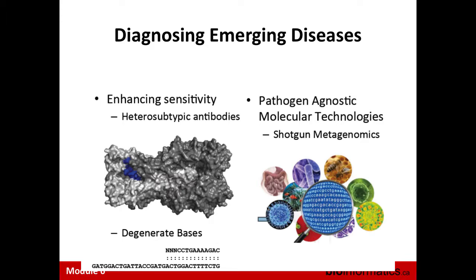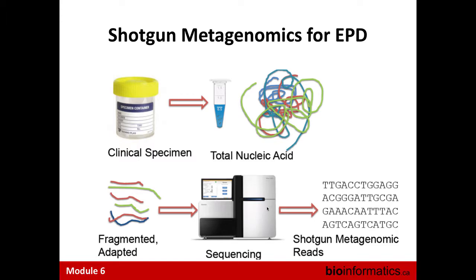With whole genome sequencing, you don't need any pre-existing diagnostic or need to enhance the sensitivity of existing diagnostics — you just sequence the genome, look at it, and attempt to diagnose the identity of that novel pathogen using only that genomic sequence information. The approach we use is shotgun metagenomics. There are two types: single locus amplicon-based techniques like 16S ribosomal RNA, where you amplify one locus as a signature for the organism.